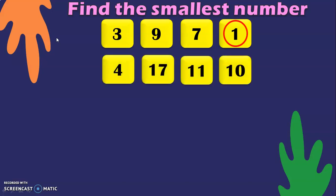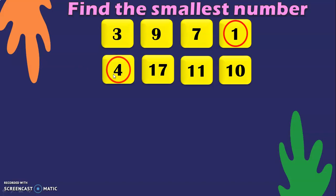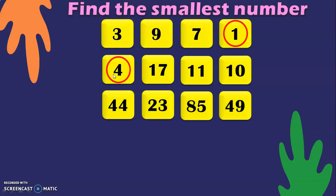The next question gives us four different numbers: 4, 17, 11, and 10. We have one one-digit number and three two-digit numbers. Remembering the first rule — a one-digit number is always smaller than a two-digit number — we can decide that 4 is the smallest number in this series.